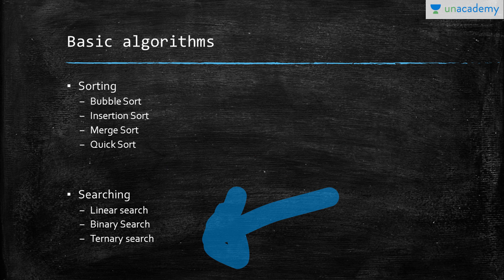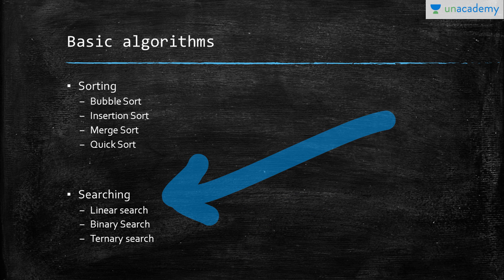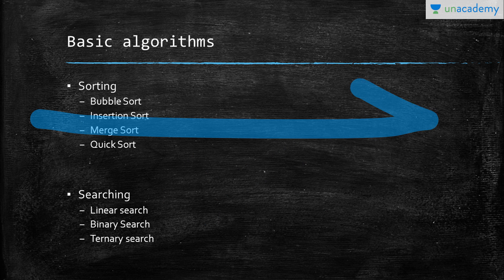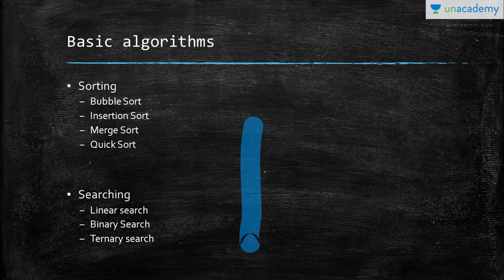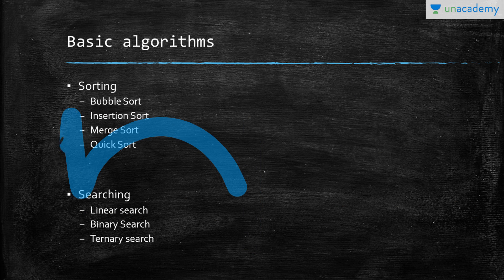We have three types of searching algorithms. One is linear search, second is binary search, and third is ternary search. In linear search, we take the element that we want to find and then search it in the whole array in a sequential manner.